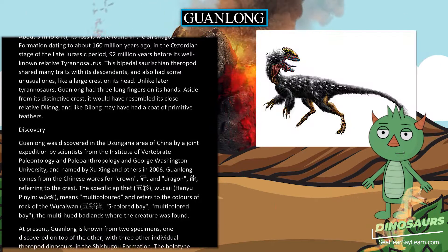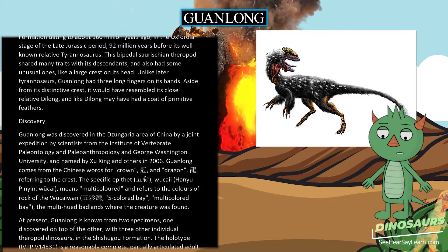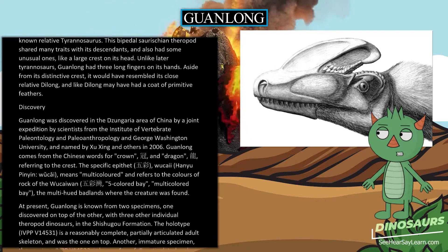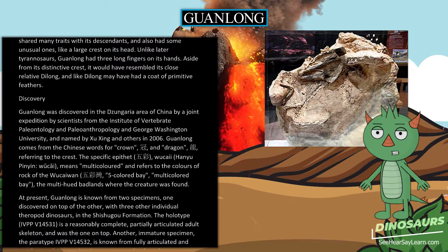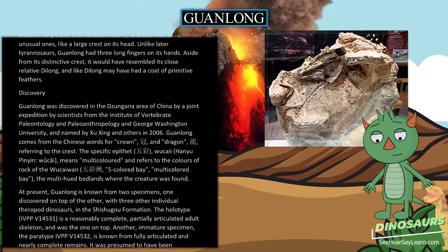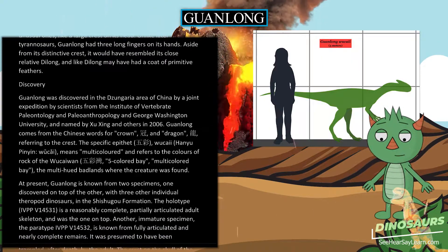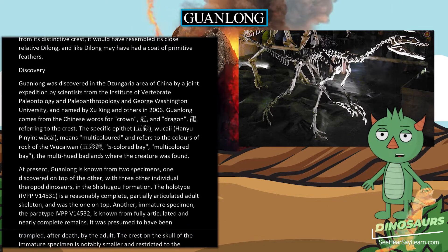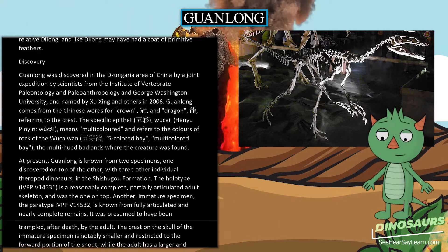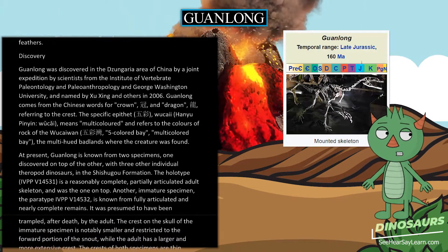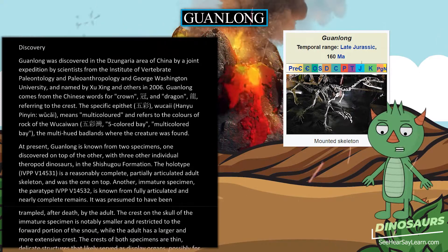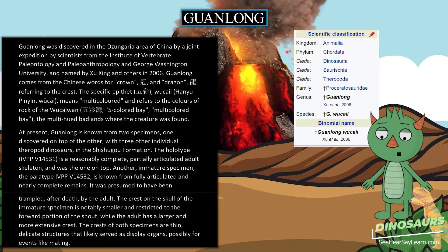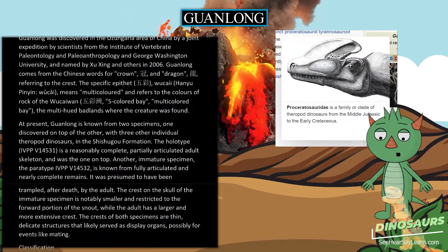Aside from its distinctive crest, it would have resembled its close relative Dilong, and like Dilong may have had a coat of primitive feathers. Guanlong was discovered in the Junggar area of China by a joint expedition by scientists from the Institute of Vertebrate Paleontology and Paleoanthropology and George Washington University, and named by Xu Xing and others in 2006. The specific epithet wucaii means 'multicolored' and refers to the colors of the rock of the Wucaiwan (Five Colored Bay), the multi-hued badlands where the creature was found.